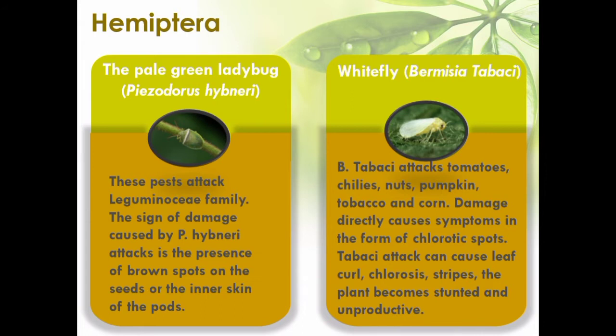Whitefly, Bemisia tabaci, is a small white insect pest that can cause direct and indirect damage to plants. Whitefly attacks tomatoes, chilies, nuts, pumpkin, sugarcane, cassava, tobacco, and corn. Direct damage causes symptoms in the form of chlorotic spots due to wounds caused by whitefly. The severity of whitefly's attack can cause leaf curl and chlorosis.